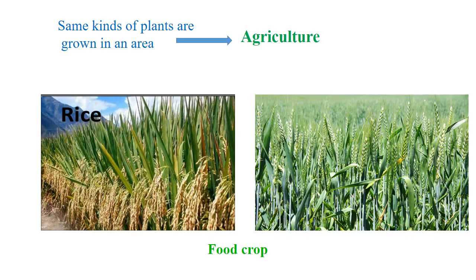From plants we obtain grains, fruits, vegetables, cereals, etc., and they are grown in fields. When the same kinds of plants are grown in an area, it is known as agriculture. The plants grown in an agricultural area are called crops, and the crops used to obtain food are called food crops. Two examples of food crops are rice and wheat.